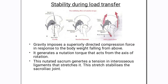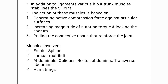Regarding the action of stability: as the mechanical axis and the line of gravity pass anterior to the base of the sacrum, gravity imposes a superiorly directed compressive force transmitted from the femoral head to the acetabula in response to the weight falling from above. This generates a nutation torque and causes nutation at the sacrum. The nutation so caused generates tension within the interosseous ligament and causes the sacrotuberous ligament to stretch. These oppositely directed forces by the non-contractile connective tissue lead to stability of the SI joint.